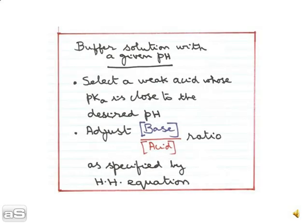Now we want to prepare a buffer solution with a known pH. So we have to select a weak acid whose pKa value is close to the desired pH. And then later we have to adjust the concentration of the base to the acid, and that ratio has to be adjusted as specified by the Henderson-Hasselbalch equation.